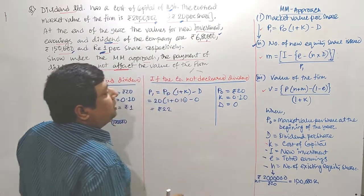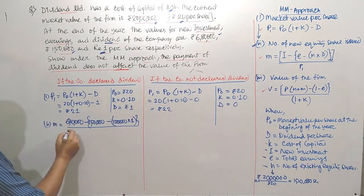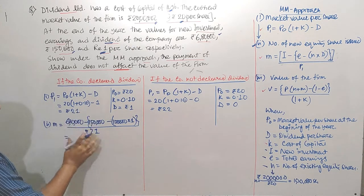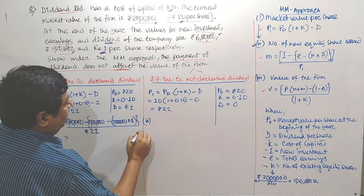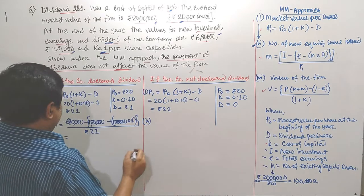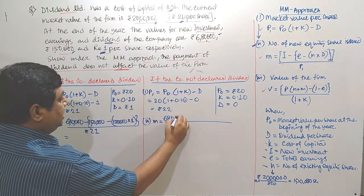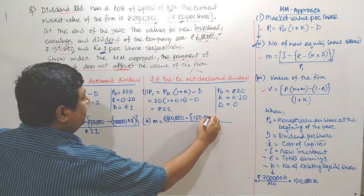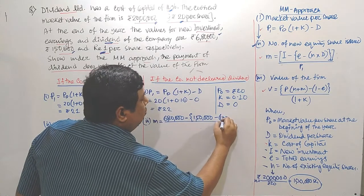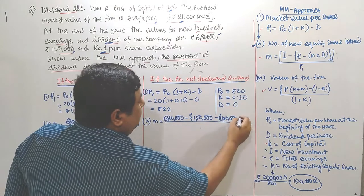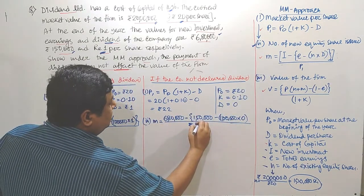D stands for dividend per share. In case 1 (dividend declared), D is Rs. 1, and P1 is Rs. 21. In case 2 (no dividend), D is considered as 0 and P1 is Rs. 22. We then solve the equation for M in each case.